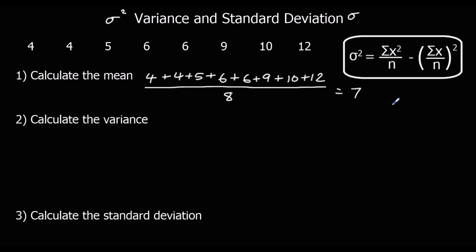There are two ways of working out the variance. The first way is better for explaining what variance is, and the second way is the method you're going to use most often. To calculate the variance, we look at how far each number is from the mean.